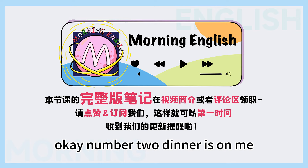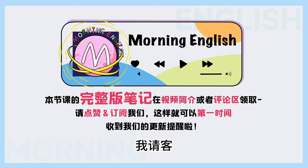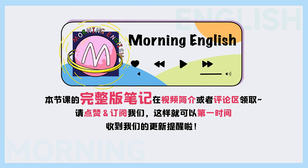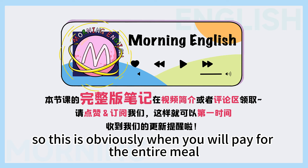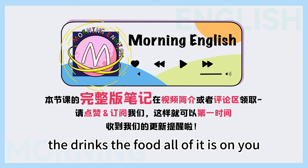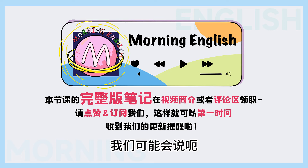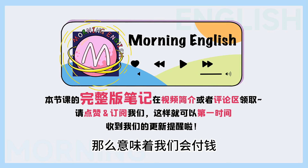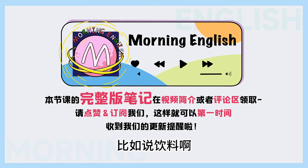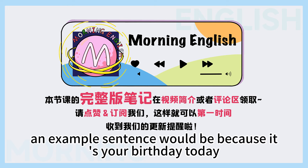Number two: Dinner is on me. 在第二个短语里面我们学到的是呢，我请客。 So this is obviously when you will pay for the entire meal — the drinks, the food, all of it is on you, it's your responsibility. 在吃饭的时候呢，我们可能会说 dinner is on me，那我们意味着我们会付钱所有的东西，比如说饮料啊，食物啊，所有的东西。 So an example sentence would be: because it's your birthday today, dinner is on me.